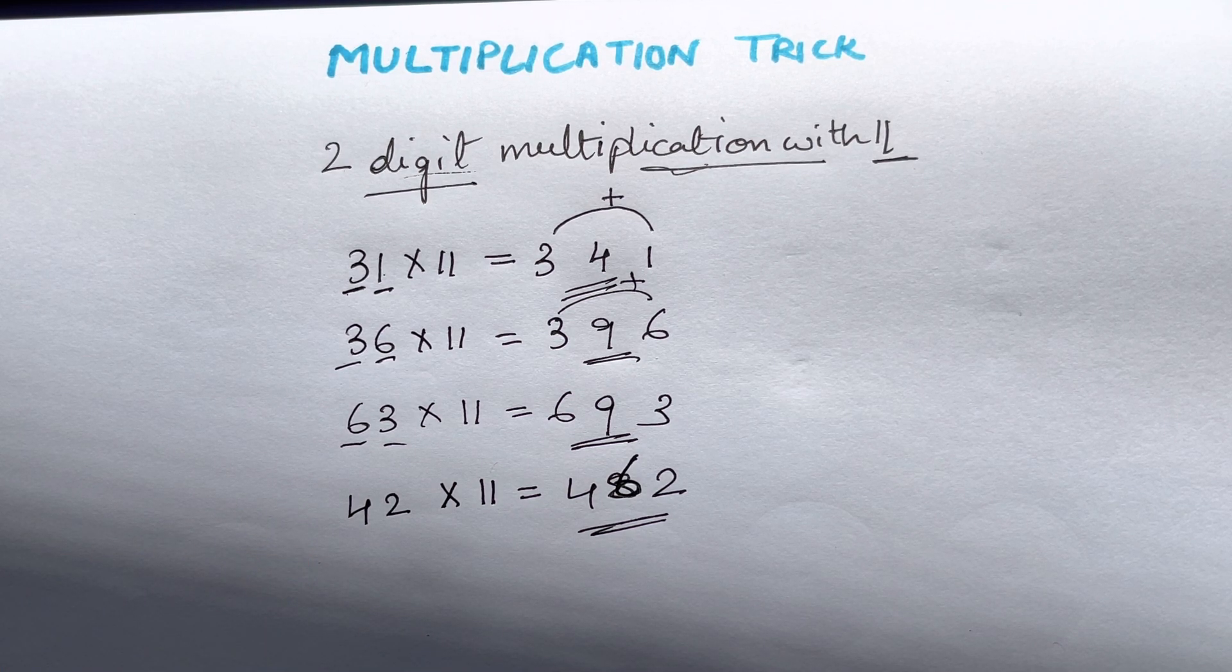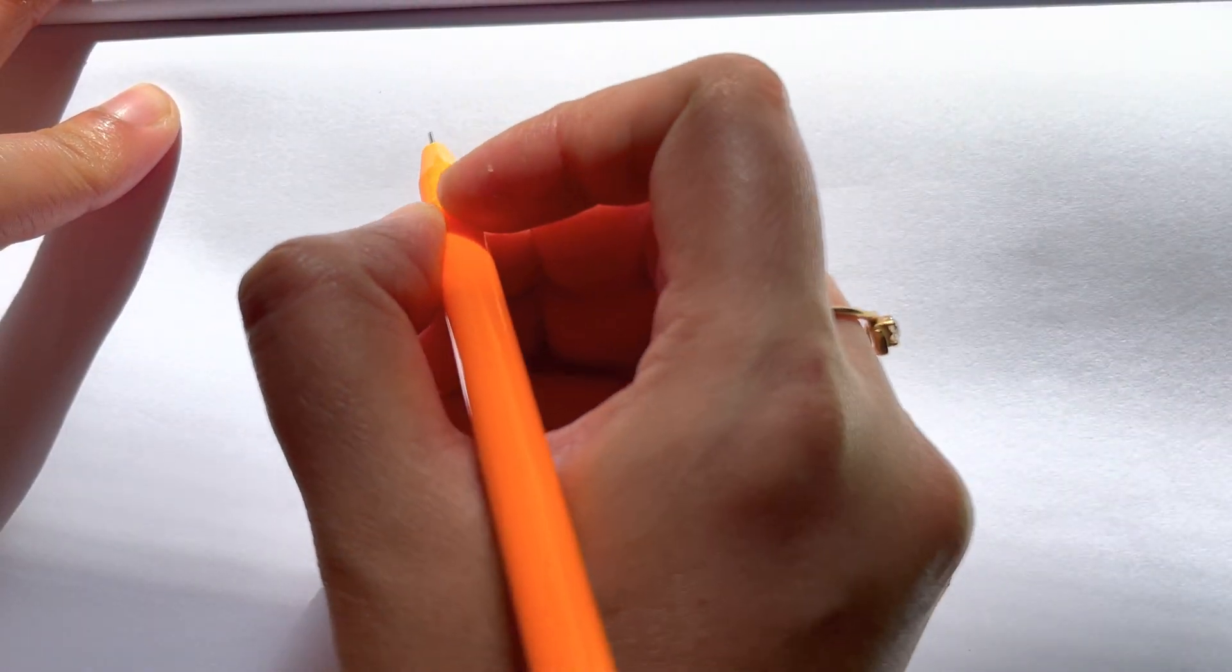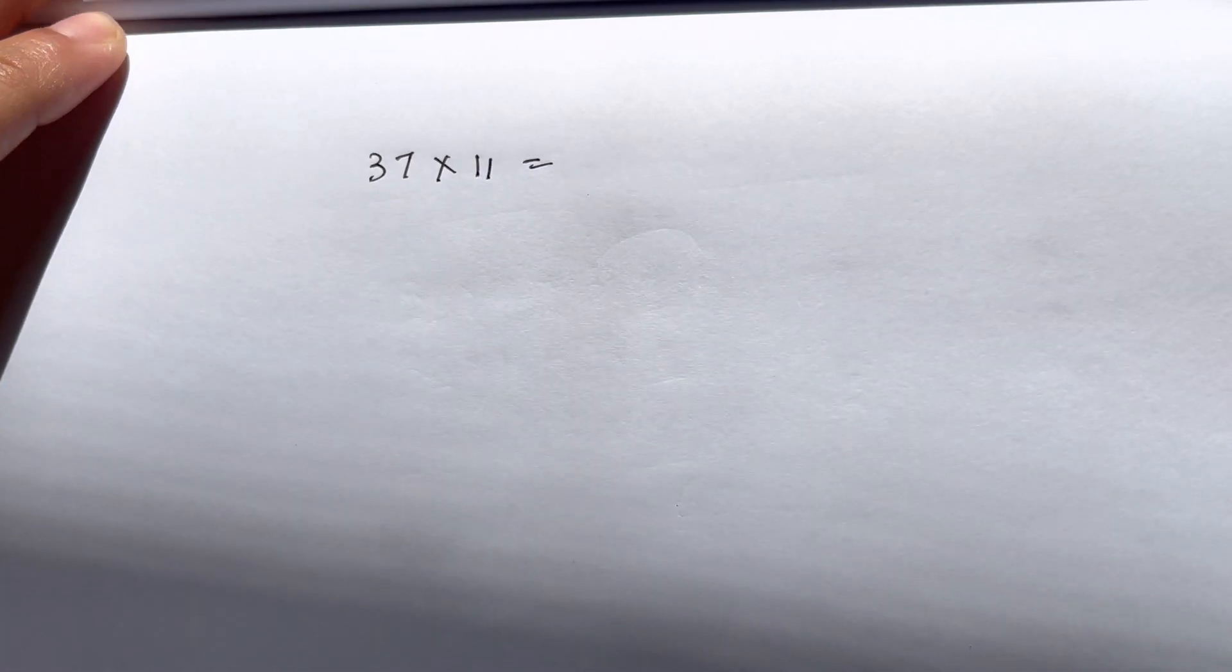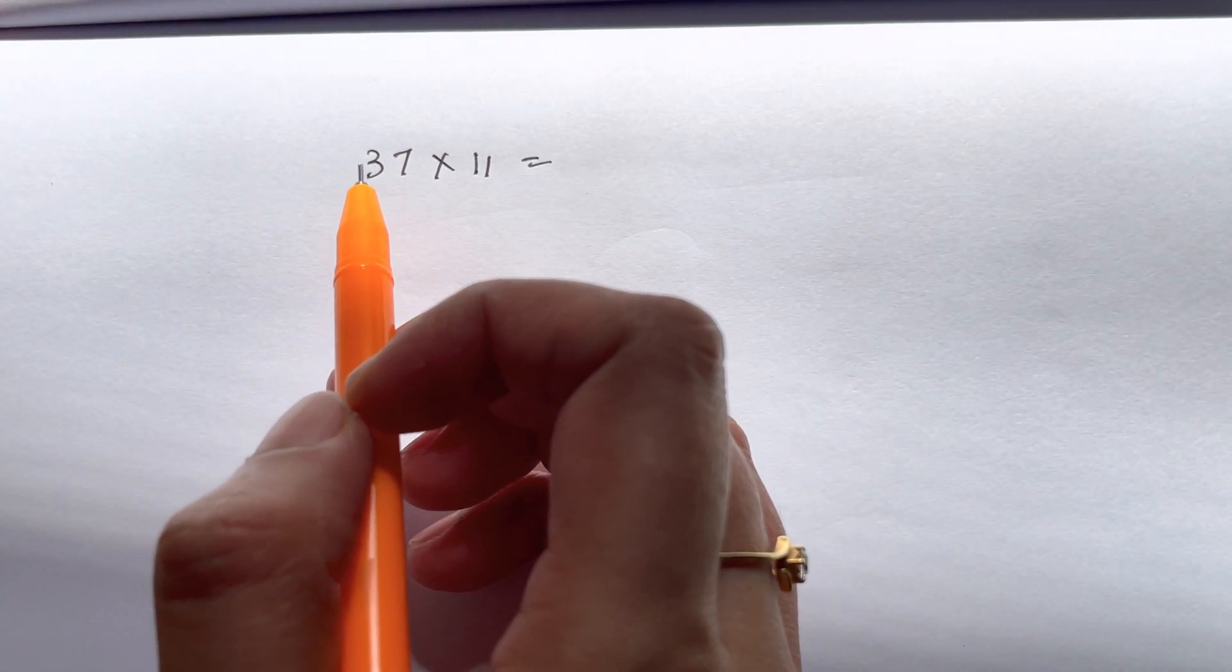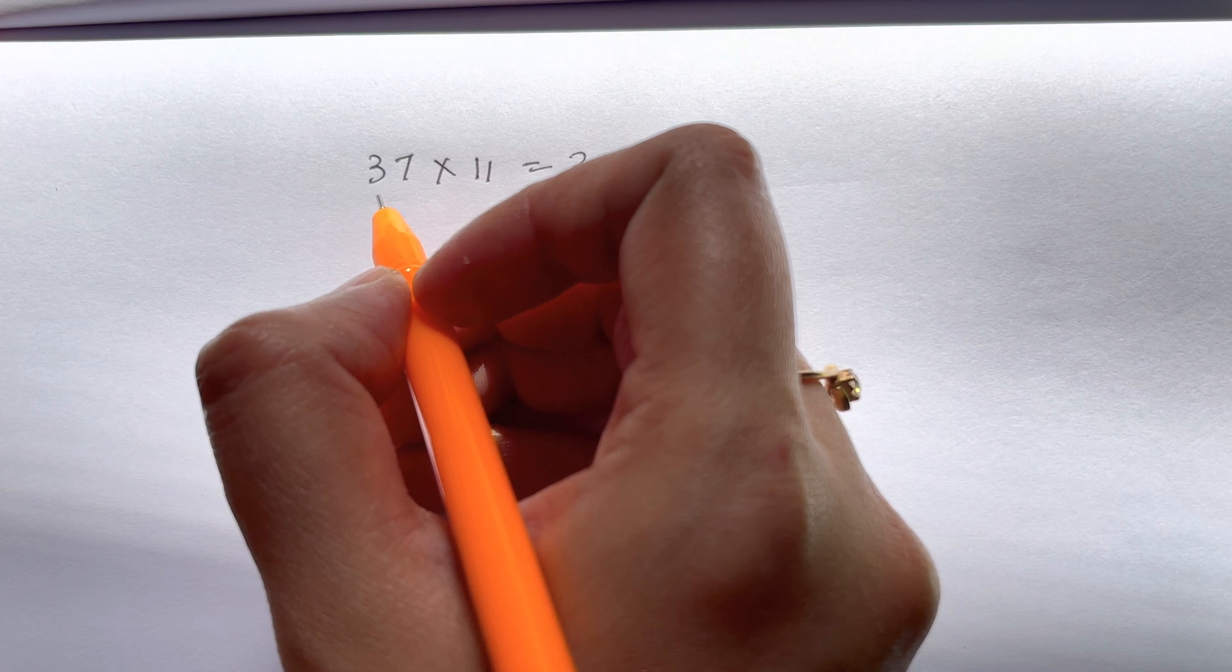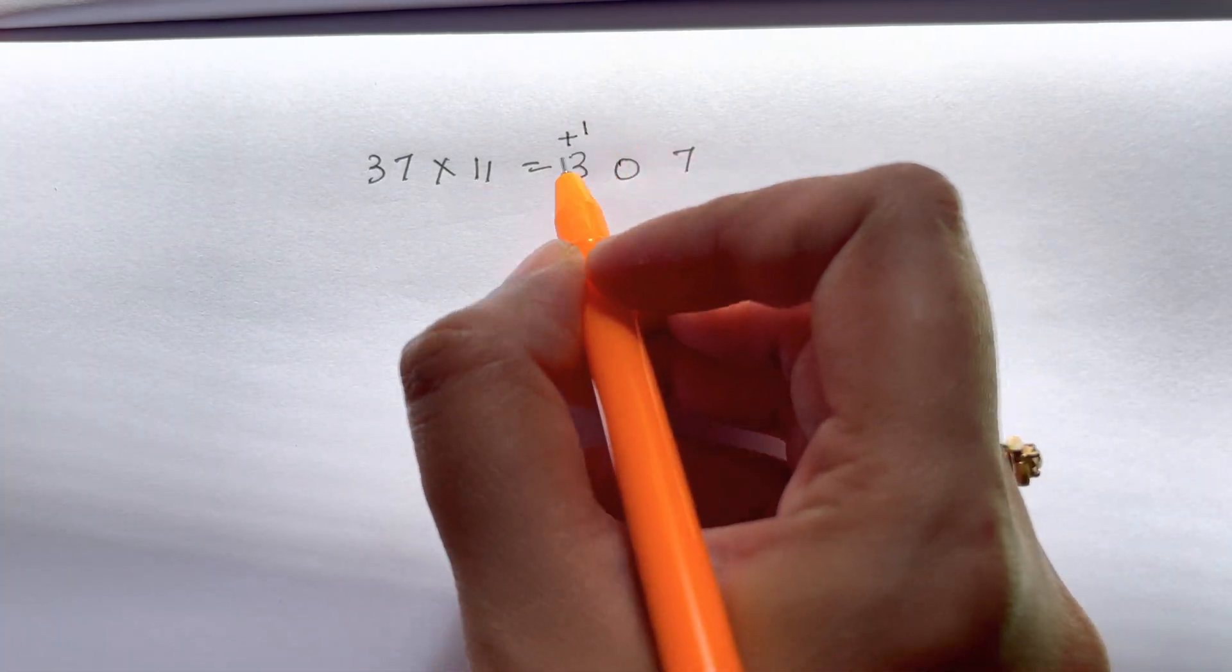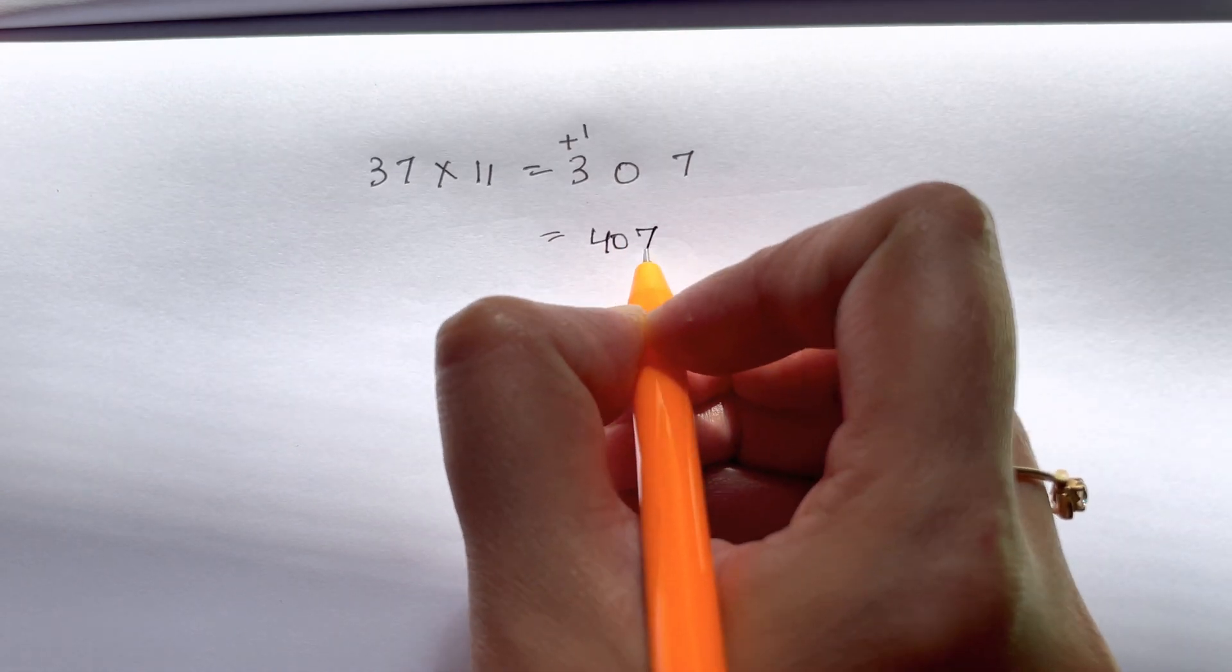So let us try some examples like 37 times 11. Now what do you think? These two numbers don't add up to 9, they add up to 10. So you will just have to write down 3 and a 7 at the end. 7 plus 3 is 10, so you'll just have a 0 and put a carry over on the number above, that is 3. So 3 plus 1 is 4, your answer is 407.